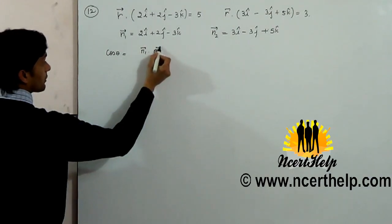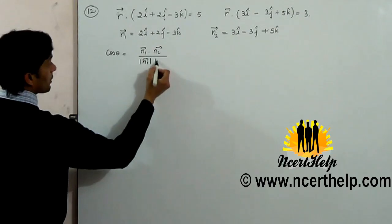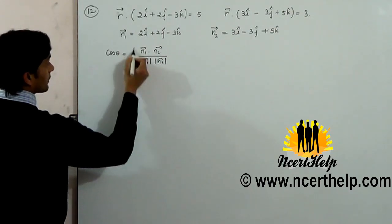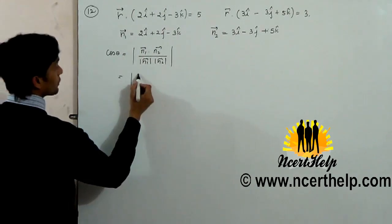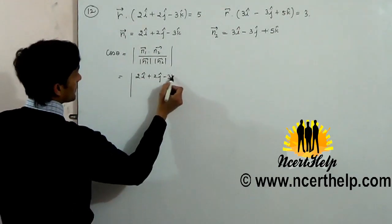n1 vector dot n2 vector upon magnitude of n1 vector magnitude of n2 vector. N1 is 2i plus 2j minus 3k dot 3i minus 3j plus 5k.